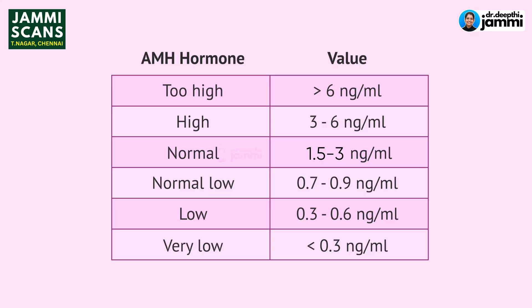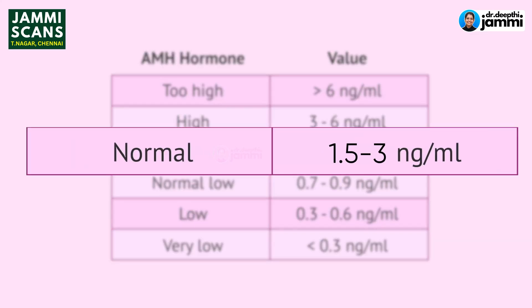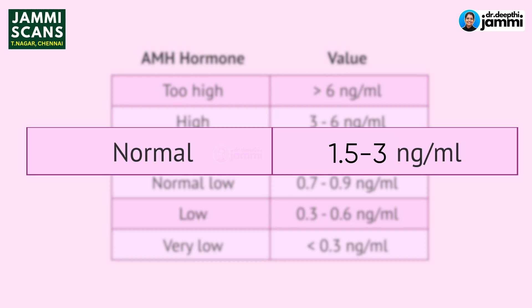Both men and women have AMH levels, but it is especially important for women. The value we're focused on is 1.5 to 3 — if the value is in that range, the chances of conception are higher.